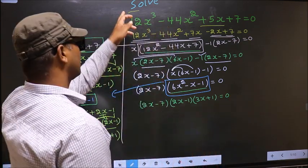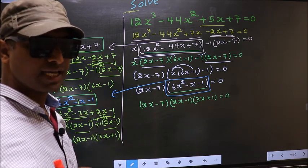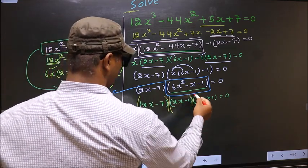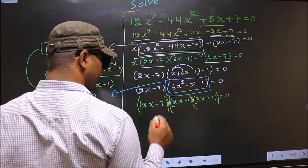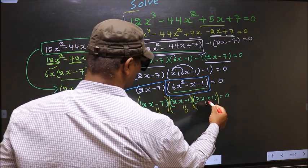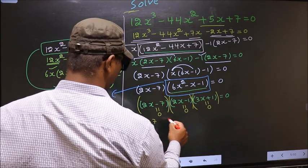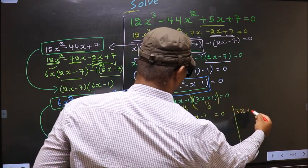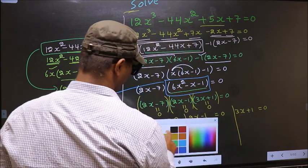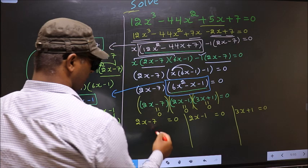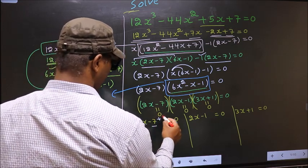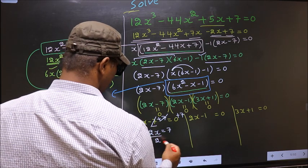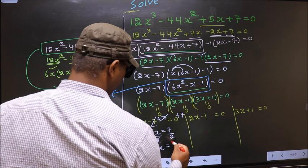We need to find the values of x. We have a product of brackets equal to 0, so we equate each bracket to 0. That is 2x minus 7 = 0, 2x minus 1 = 0, and 3x plus 1 = 0. From 2x minus 7 = 0: add 7 to get 2x = 7, then divide by 2 to get x = 7/2.